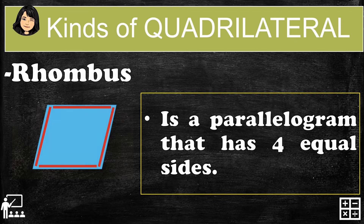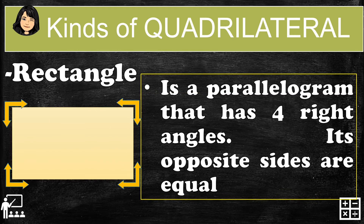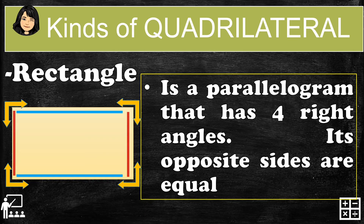Next, the rectangle. A rectangle is a parallelogram that has four right angles and its opposite sides are equal. These are the four right angles formed in the rectangle. The blue sides are equal, and the red sides — the left and right sides — are also equal in measurement.